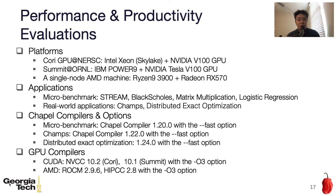We used different versions of Chapel across evaluations. For the microbenchmarks, we used Chapel 1.20. For CHAMPs, we used Chapel 1.22. For distributed exact optimization, we used Chapel 1.24. For GPU compilation, we used NVCC version 10 and AMD ROCm 2.9 plus HIP 2.8.